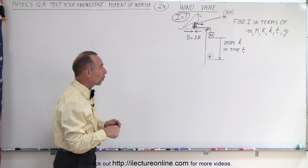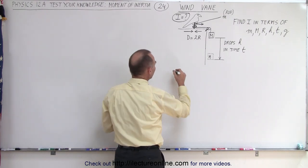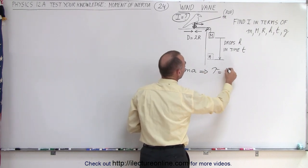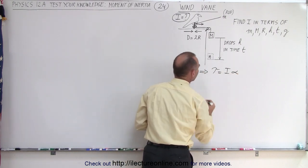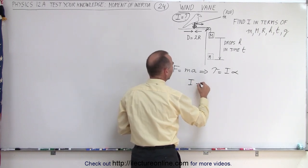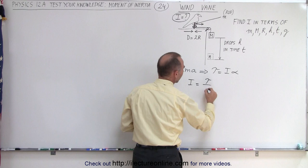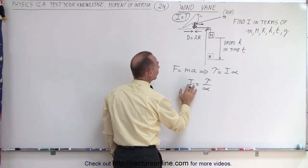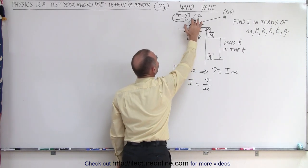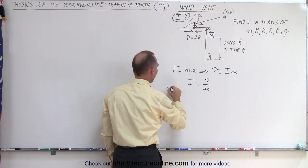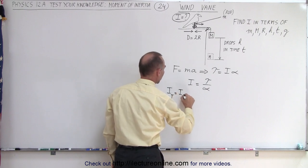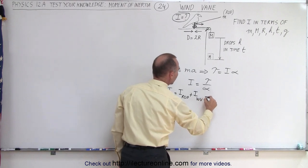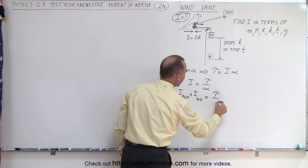We can start with the concept of torque. We're going to find the rotational equivalent of F equals ma, converting that to torque equals I times alpha. So we can say that I is equal to the torque divided by the angular acceleration. That's equal to the total moment of inertia — the moment of inertia of the rod and the wind vane combined. So I_total equals I_rod plus I_wind_vane, which equals torque divided by angular acceleration.